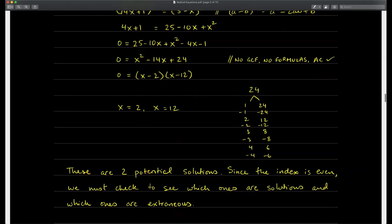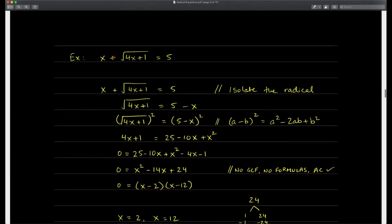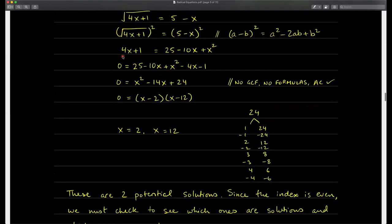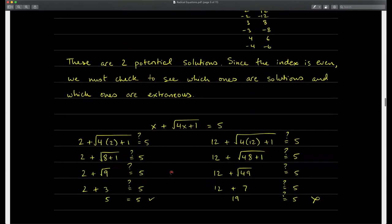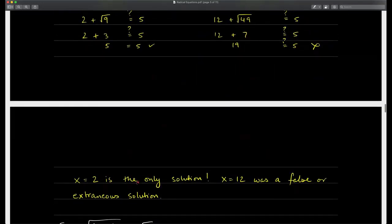Using the zero product property: x − 2 = 0 gives x equals 2, and x − 12 = 0 gives x equals 12. These are two potential solutions. Checking: plugging in 2 gives 5 equals 5, so x equals 2 is a solution. Plugging in 12 gives 19 equals 5, which is false — so x equals 12 is an extraneous solution, and x equals 2 is the only solution.